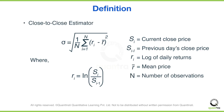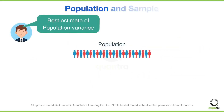This is the close-to-close estimator of volatility. It turns out that this is also the best estimate of the population variance — it is the maximum likelihood estimator.